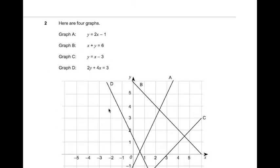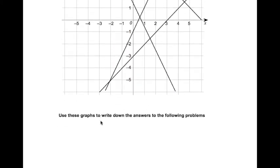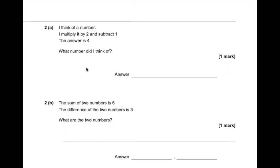Right, question 2. Here are four graphs A, B, C and D. So they all look like straight lines. Use this graph to write down the answers to the following problems. So 2A. I think of a number. I multiply it by 2 and subtract 1. The answer is 4. What number did I think of? So there's a couple of ways of doing this. So you might think, well, I could just make an equation out of this. So 2X minus 1. So double a number. So let's call the number X. So we'd have 2X subtract 1. So we've got 2X minus 1 and that's to equal 4.